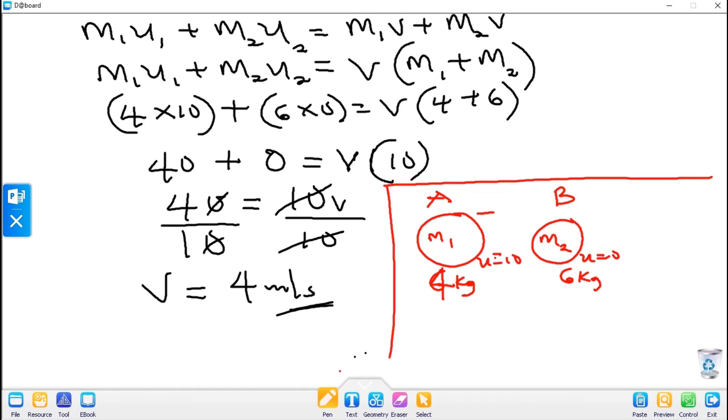Now since this guy is moving, when it collides with this - this is before collision - after collision they will both move with a common velocity. This and this, so this becomes M1, this is M2, with common velocity V which is 4. So this is after collision. So basically this is what happens when both bodies collide.